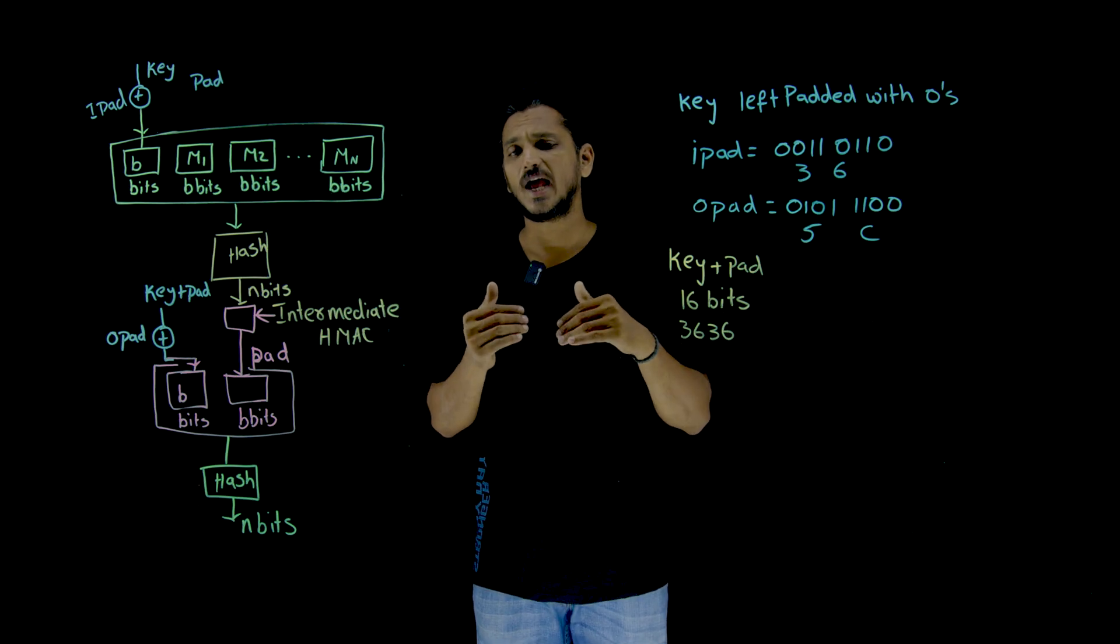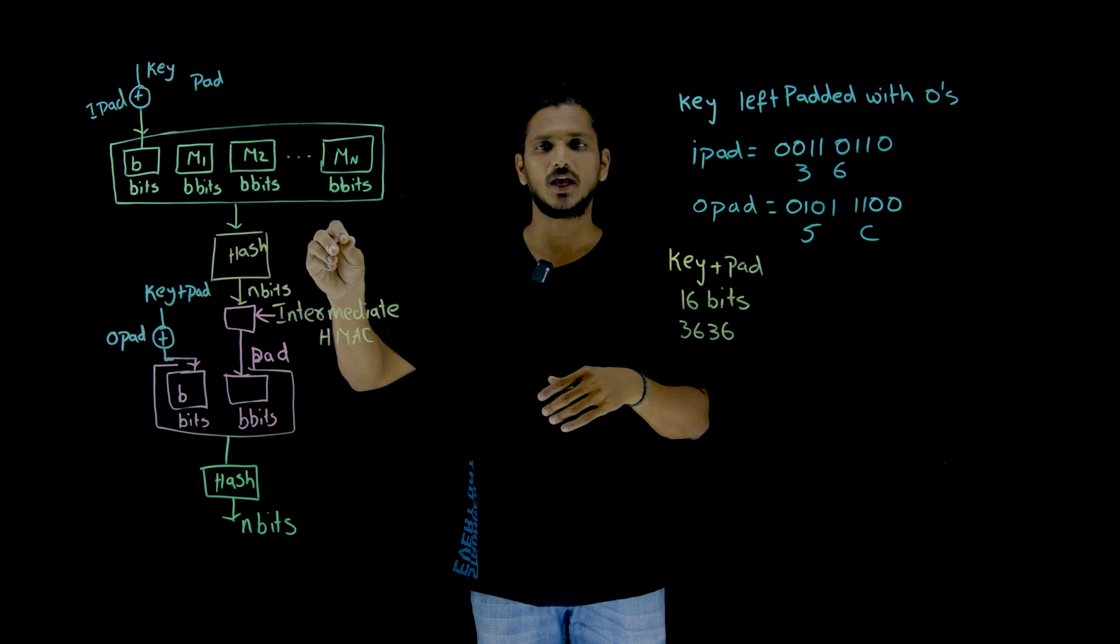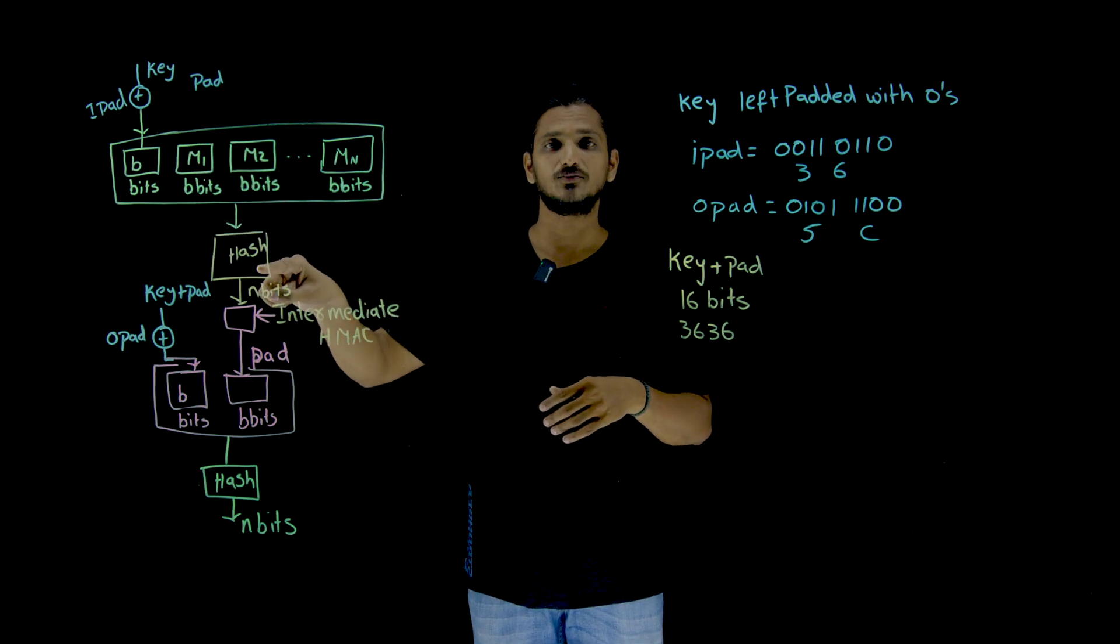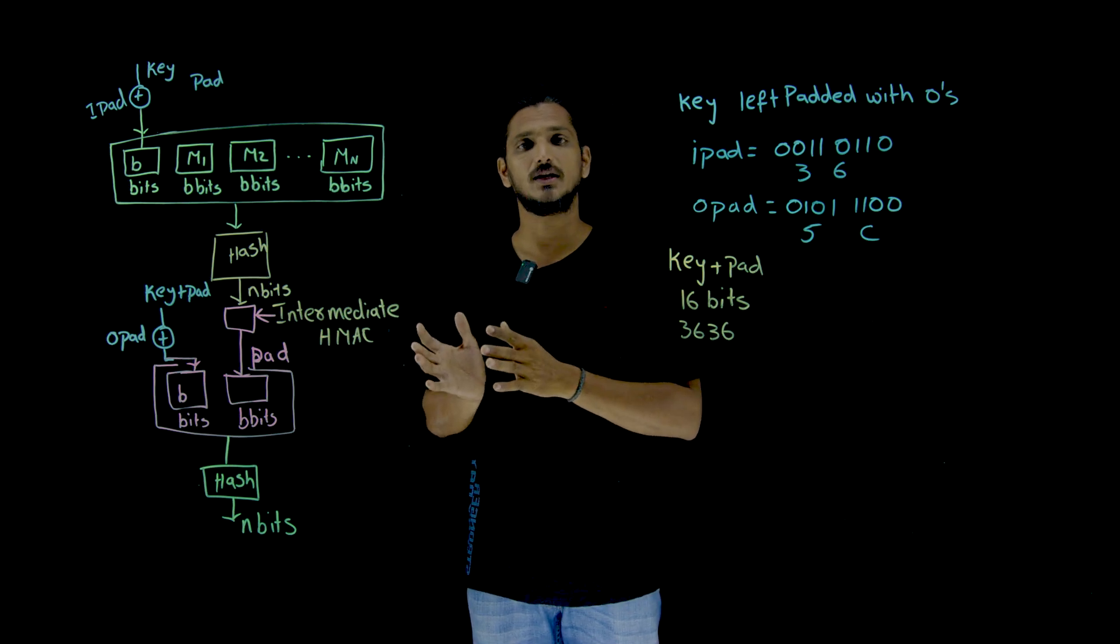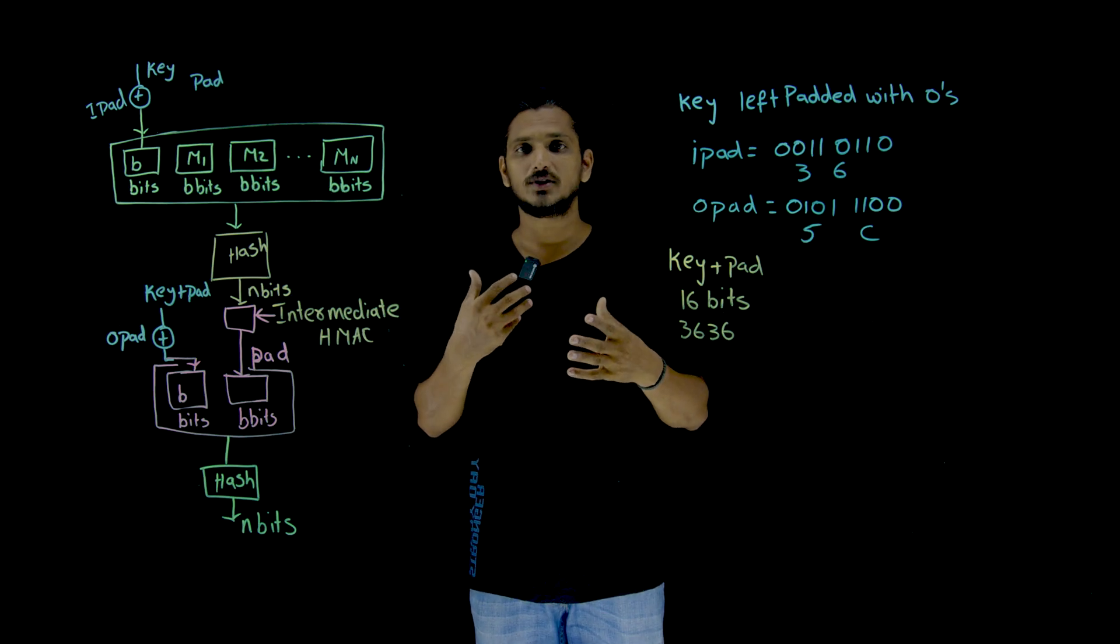So what happens inside the hash function? Whether it will take the message b bits at a time or complete message at a time? This is not discussed up to now in our previous classes. In our next class, we are going to discuss our first cryptography hash function,